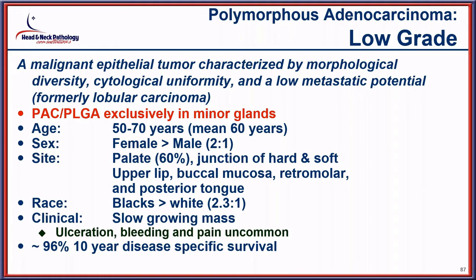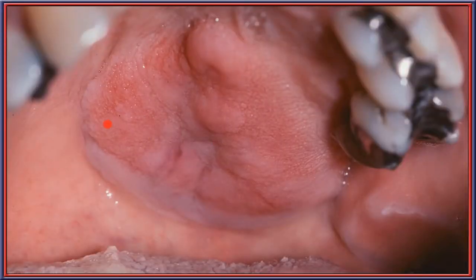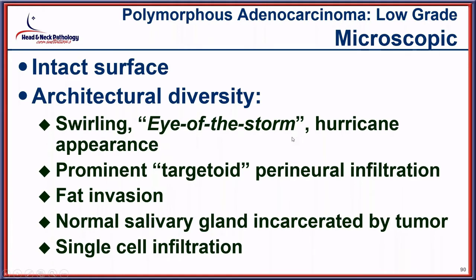It is the second most common intraoral salivary gland lesion, up to about 2 cm in size, and creates a roughened or corrugated appearance of the luminal surface — multiple folds that are characteristic and classic for low-grade polymorphous adenocarcinoma. A good clinician will suggest this diagnosis on the specimen. Histologically there is an intact surface with remarkable architectural diversity: swirling, an eye-of-the-storm or hurricane-type appearance with a common targetoid center that invades into adjacent fat and shows single-cell infiltration.